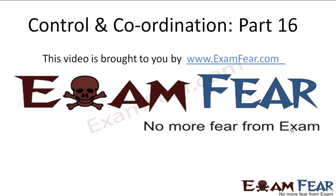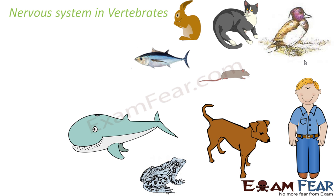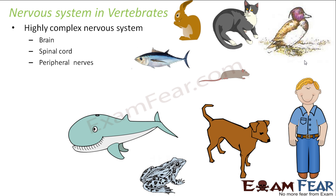This video on control and coordination part 16 is brought to you by examfear.com. Let us talk about the nervous system in vertebrates. When we say vertebrates, we see a wide variety of organisms — dogs, rats, cats, birds, fishes, amphibians, and human beings. They have a highly complex nervous system because their bodies are also very complex and well organized.